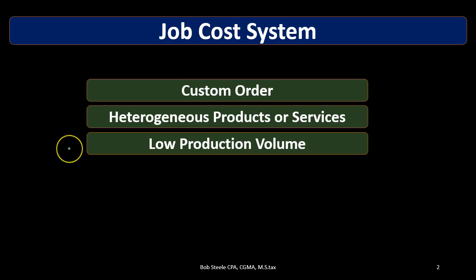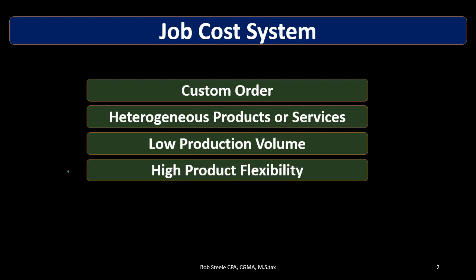Low production volume is another characteristic of a job cost system. If we're making custom guitars, we produce far fewer of them, but we charge a higher price. A job cost system follows from having differentiation and customization, meaning products are different in nature. That typically results in lower production volume. High product flexibility also follows from customization — the more variation we have within what we make, the more we need a job cost system.